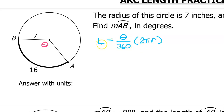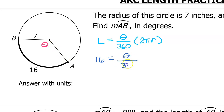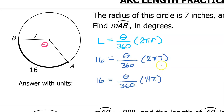All we have to do is fill in the two things that we know. We know that the arc length is 16, so we can put 16 in for L. We're looking for the central angle theta, so I'm going to leave theta over 360. And we are given that the radius is 7 inches, so that's 2 pi times 7. 2 times 7 is 14, so let's just write this as 14 pi.